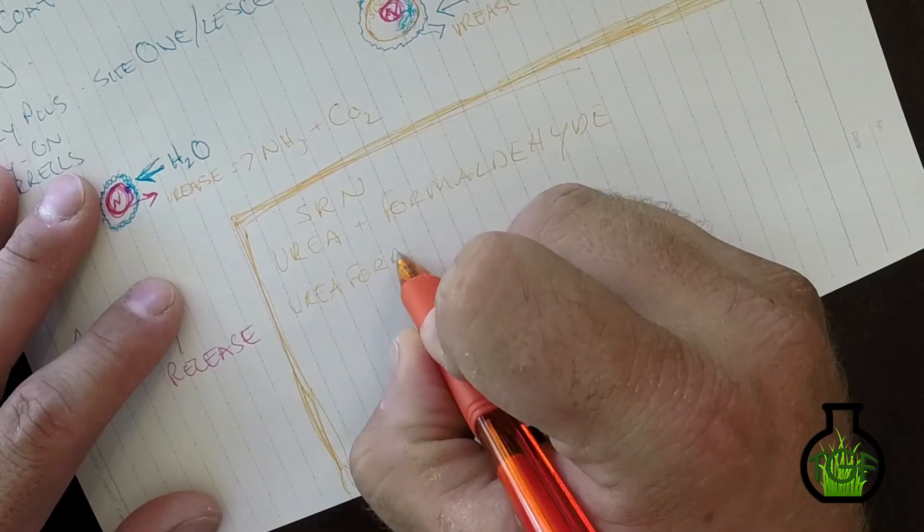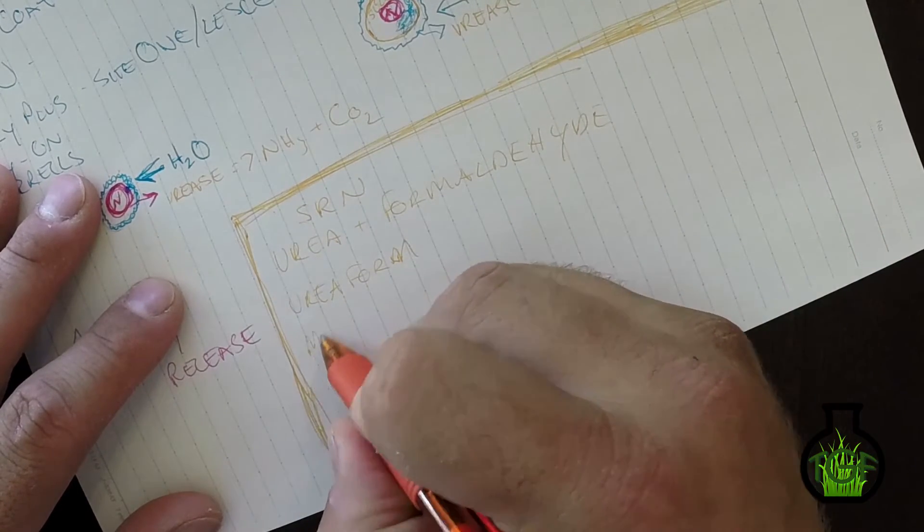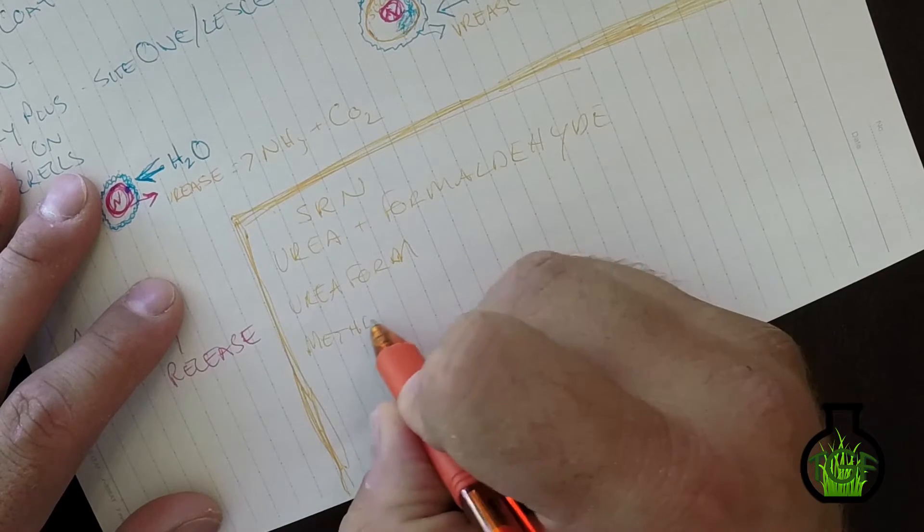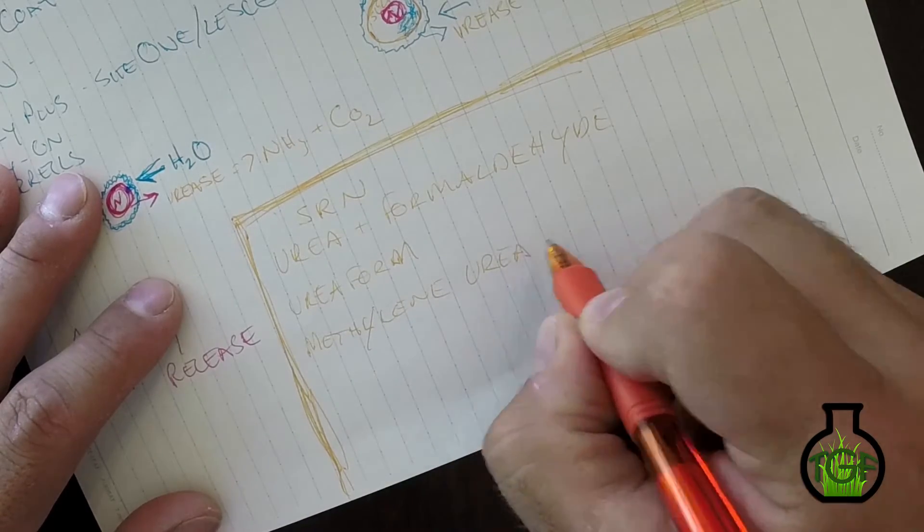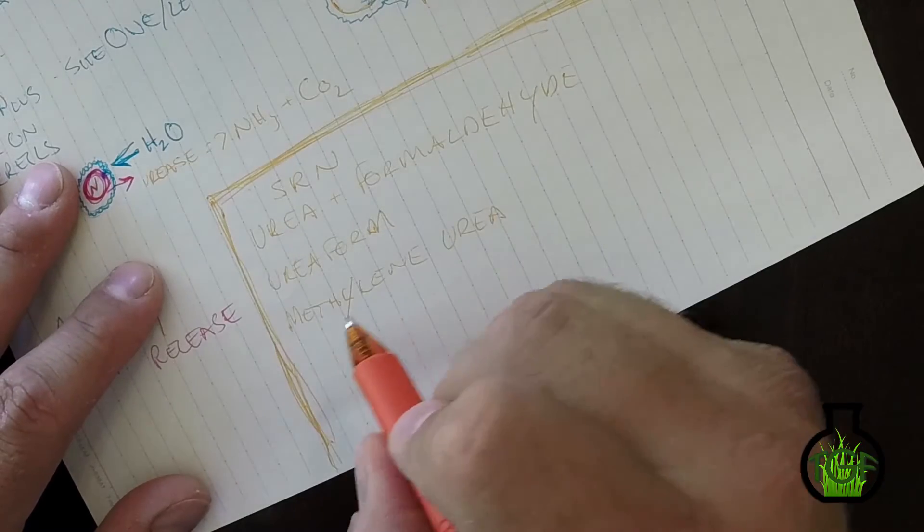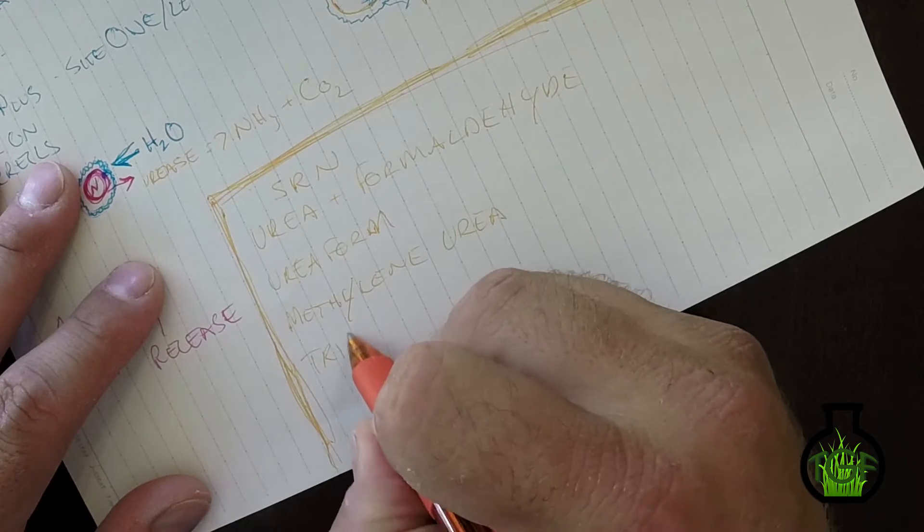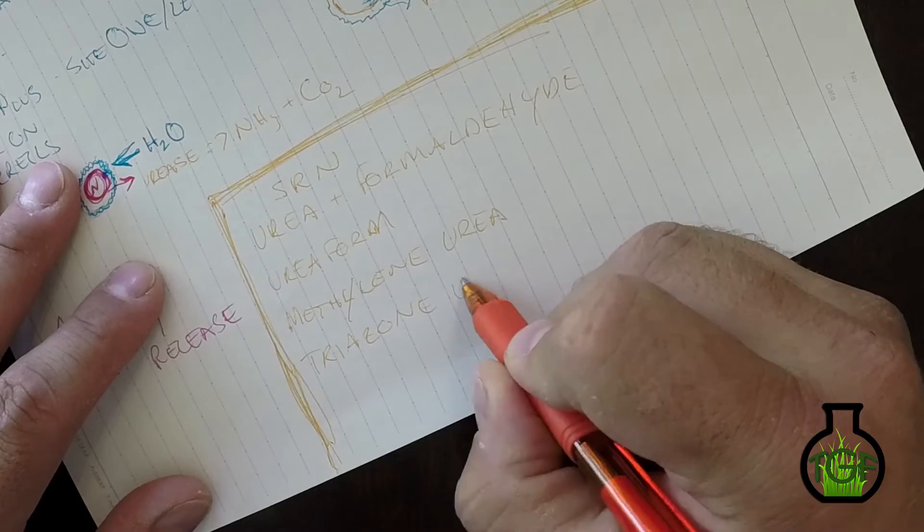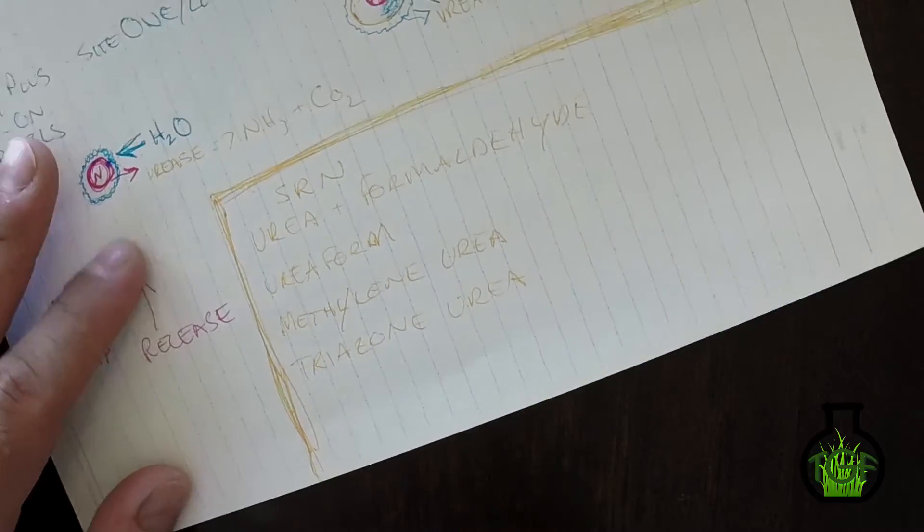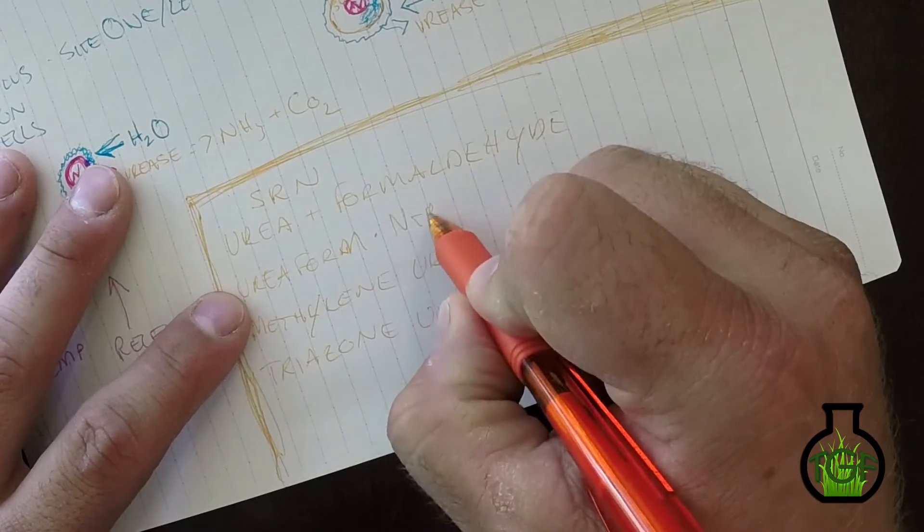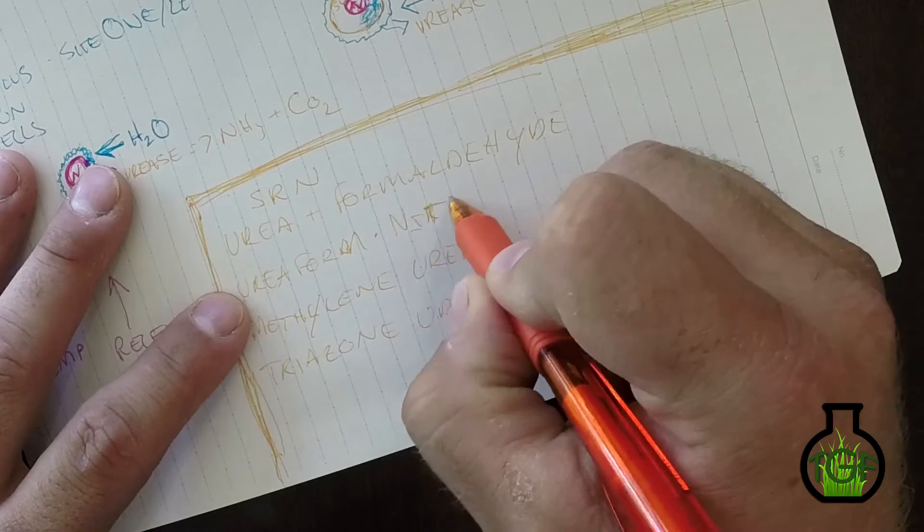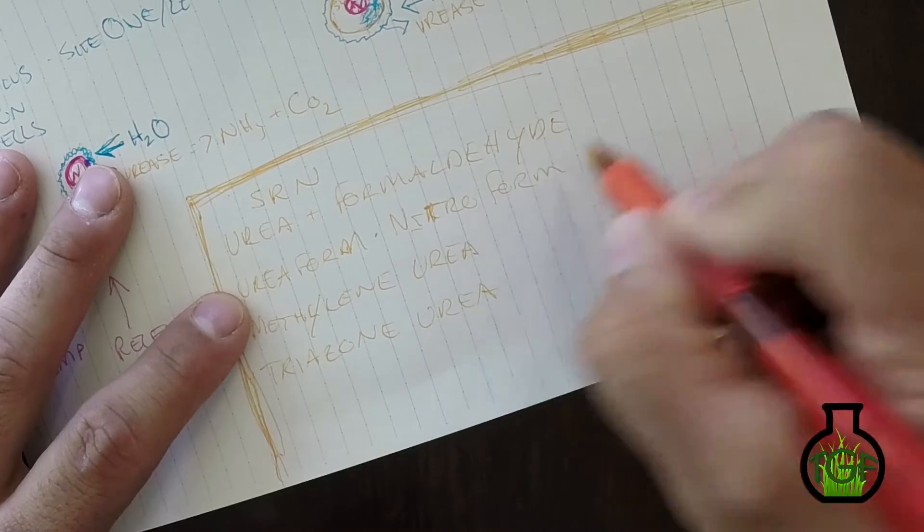So triazone... Urea form is going to be like your Nitro form, which is real popular on golf courses. It's so expensive it's almost impossible to apply in a residential setting. As far as its release factor, it's going to release super slow.